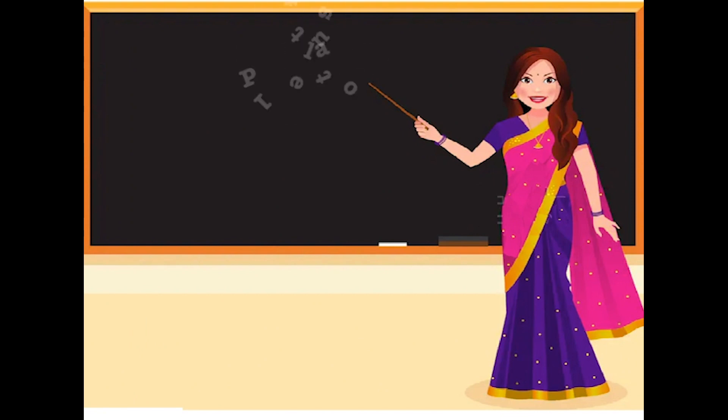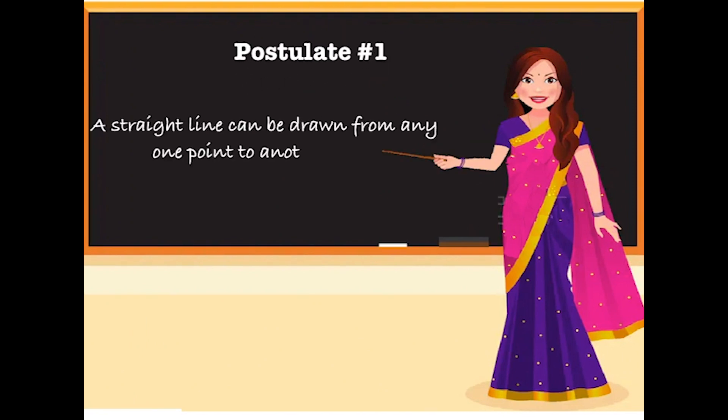So now let us look at postulate 1. A straight line may be drawn from any one point to any another point. This means that if there are two points, point A and point B, we can join these two points by drawing a straight line between them.